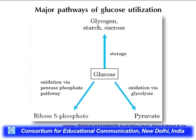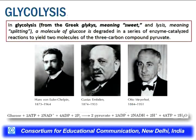The first pathway discovered was glycolysis — a Greek word from glyco and lysis meaning 'sweet splitting.' A molecule of glucose is degraded by a series of enzyme-catalyzed reactions to yield two molecules of 3-carbon pyruvate. This pathway was discovered by Hans Chalpin in yeast cells in 1897, while Embden and Meyerhof discovered it in muscle cells in the early 19th century. In this pathway, the 6-carbon glucose splits into 2 molecules of pyruvate, releasing energy as ATP and reducing equivalents NADH.